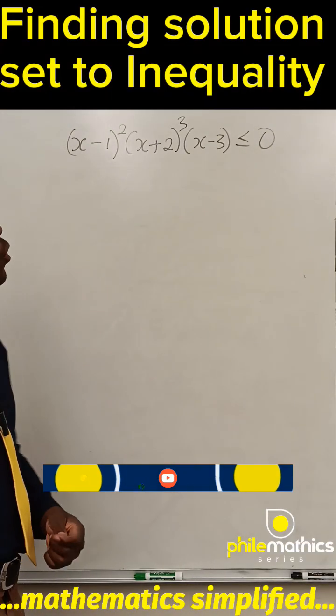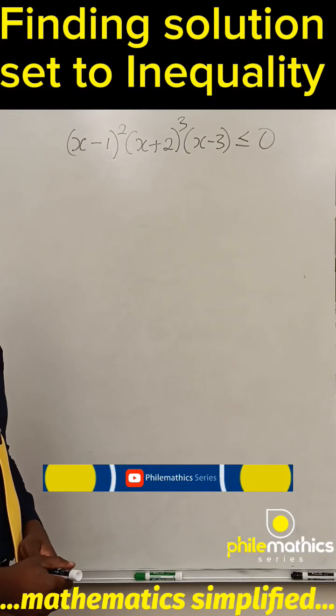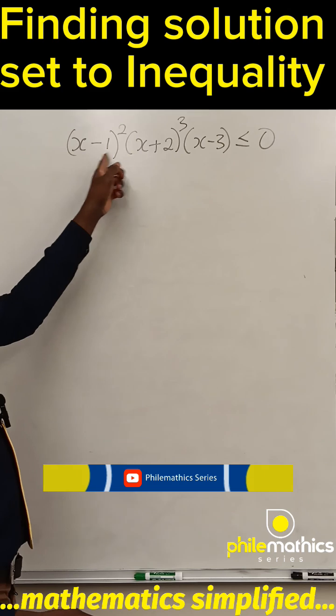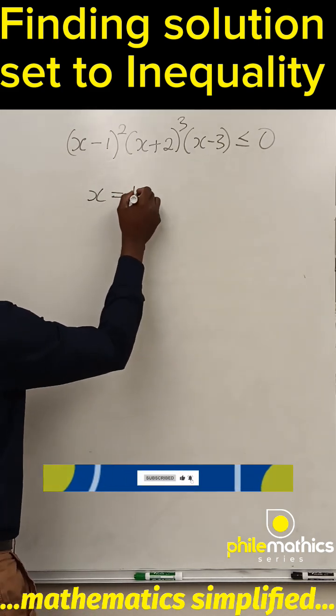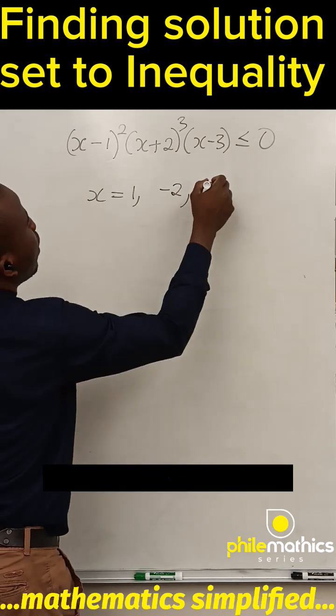Let's solve this using the wavy curve method. The first thing we do is to find the critical points, that is where these factors equal zero. They are x equals 1, -2, and 3.